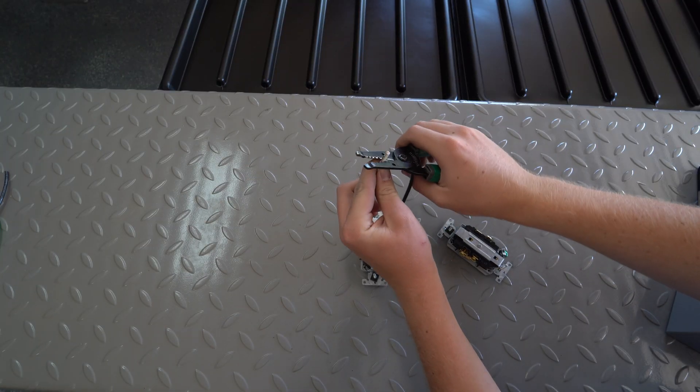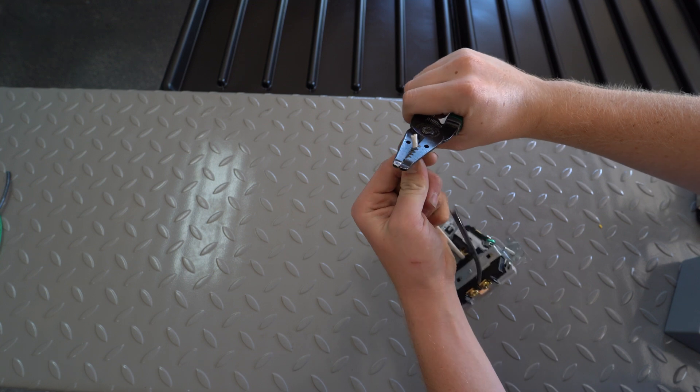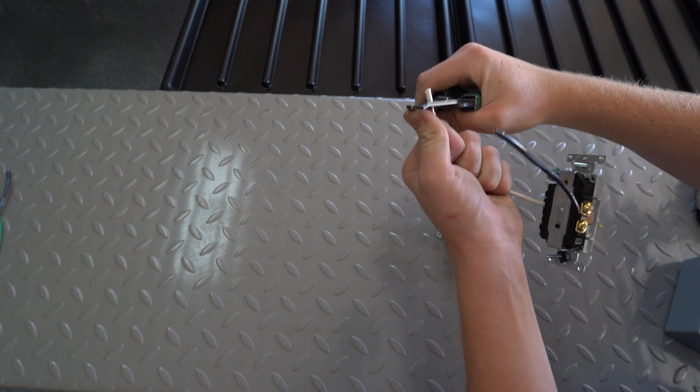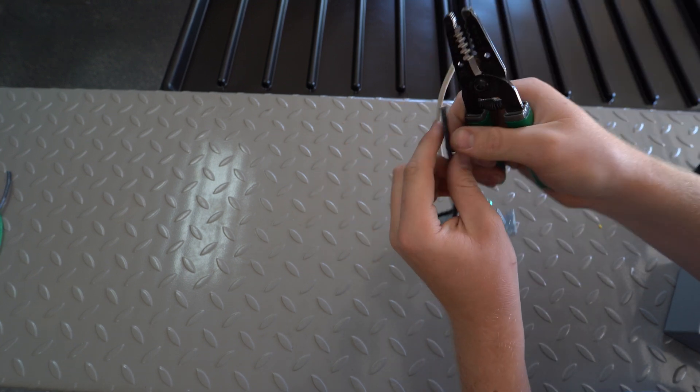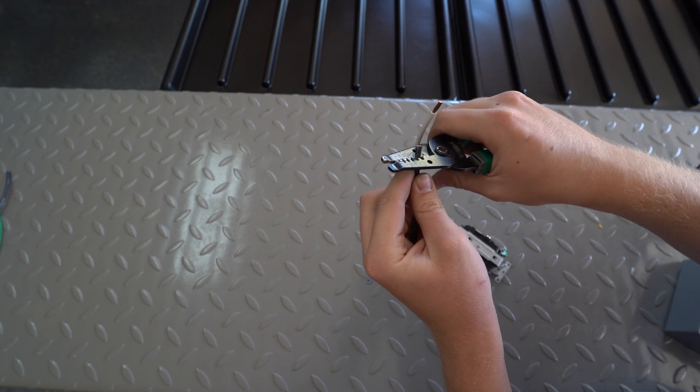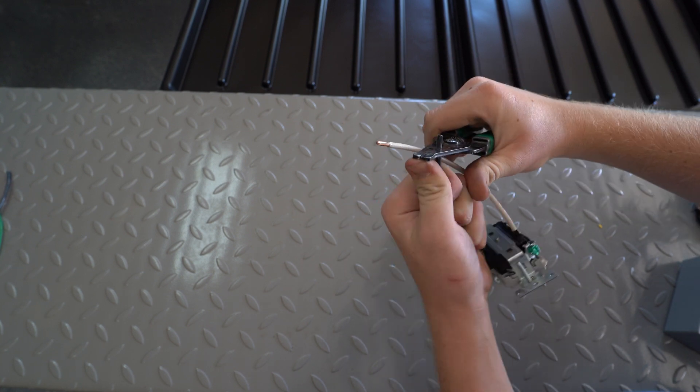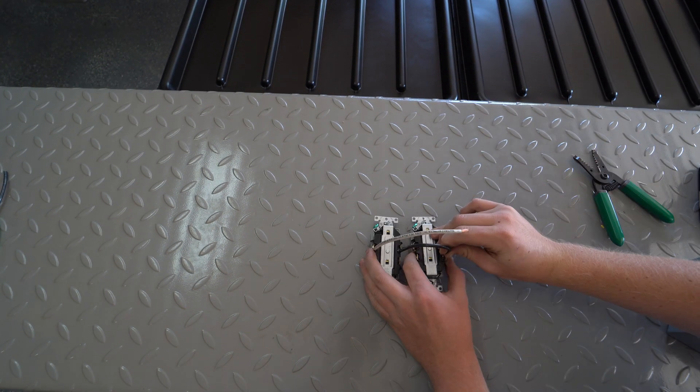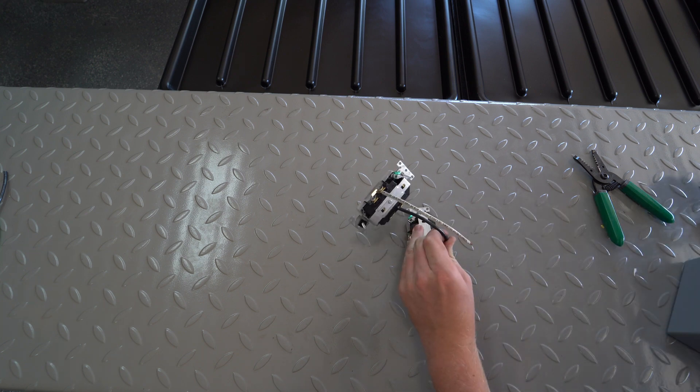Now strip the other ends of those two wires. Connect those two wires into the hot neutral side of this second outlet.